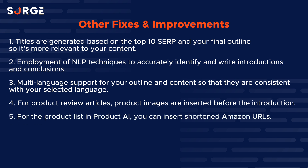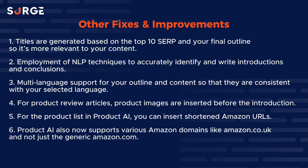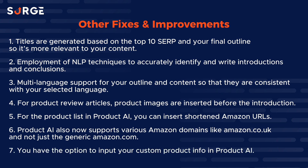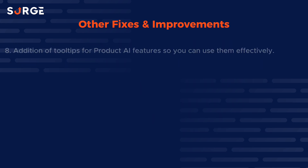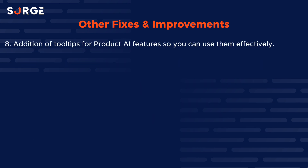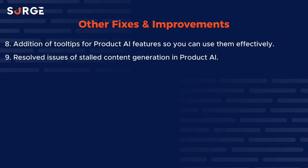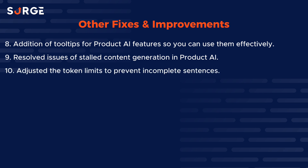Fifth, for the product list in Product AI, you can insert shortened Amazon URLs. Sixth, Product AI now supports various Amazon domains like amazon.co.uk and not just the generic amazon.com. Number seven, you have the option to input your custom product info in Product AI. Number eight, addition of tooltips for Product AI features so you can use them effectively. Number nine, we resolved issues of stalled content generation in Product AI. Number ten, we adjusted the token limits to prevent incomplete sentences.